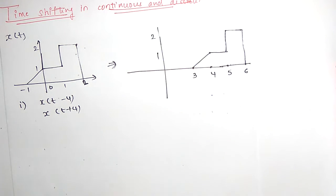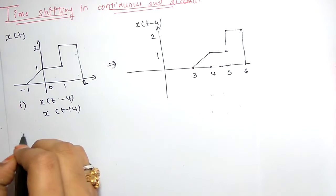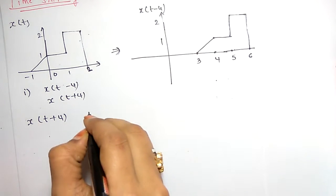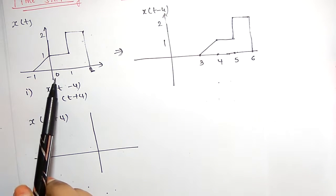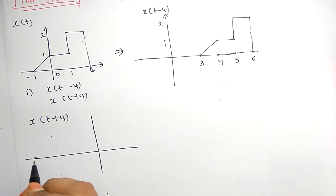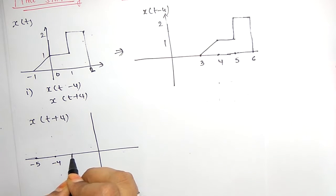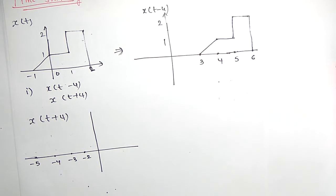That was X(t minus 4). Now for X(t plus 4), it is the same process but instead of shifting to the right the axis shifts to the left. So: minus 1 minus 4 is minus 5, 0 minus 4 is minus 4, 1 minus 4 is minus 3, and 2 minus 4 is minus 2.